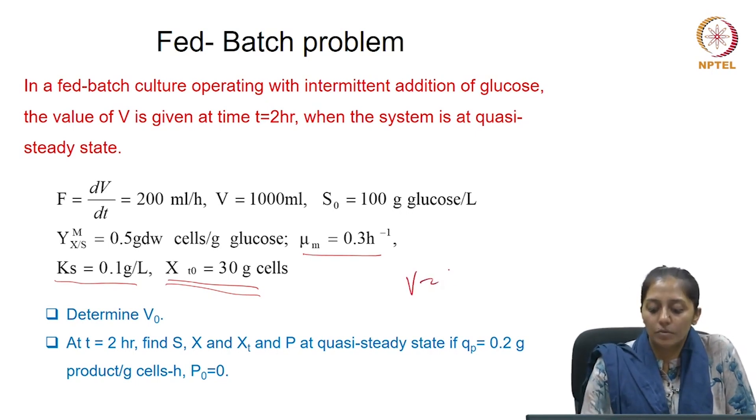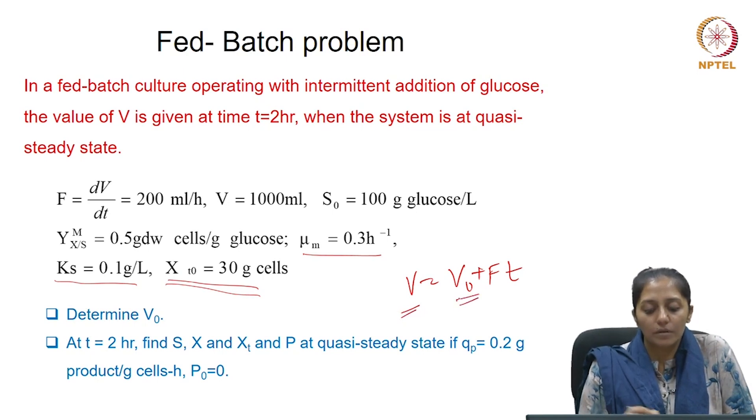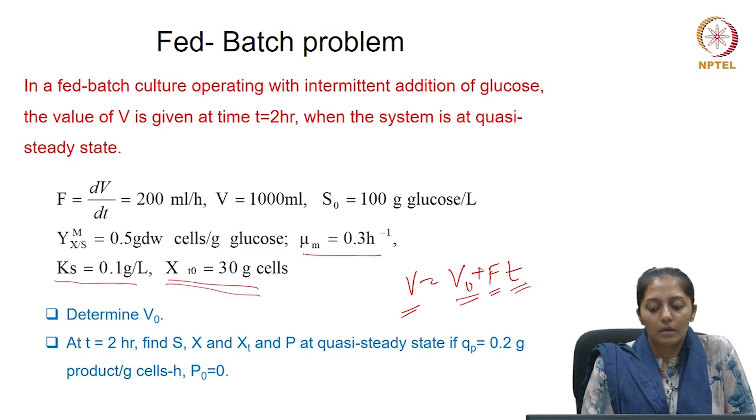So, we know V is equals to V₀ plus Ft. V is given to us. We need to find out V₀. F is known and we have to find, t is given as 2 hours at which the volume V is also known.